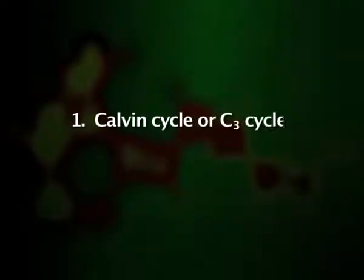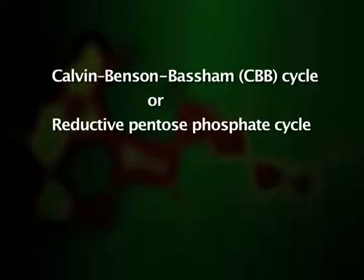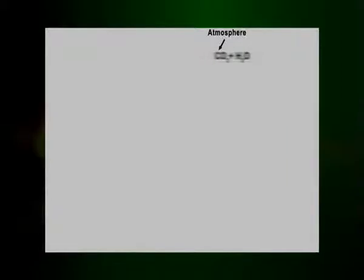Let's first discuss the Calvin cycle, which is also called the C3 cycle. The Calvin cycle is also known as the Calvin-Benson or Reductive Pentose Phosphate cycle. The cycle was discovered by Melvin Calvin, James Bassham, and Andrew Benson. It involves a series of biochemical redox reactions that take place in the stroma of chloroplasts in photosynthetic organisms.